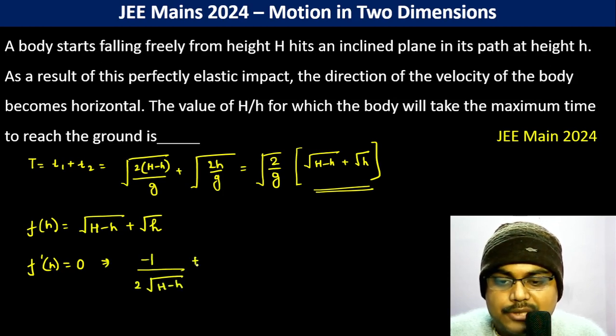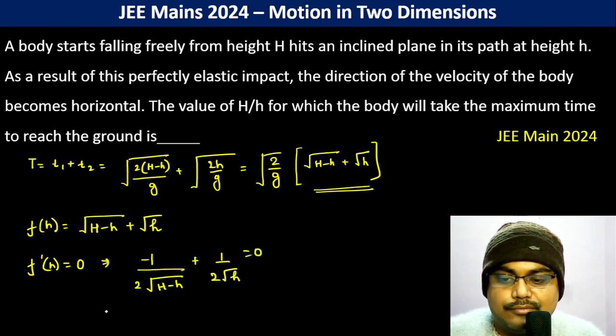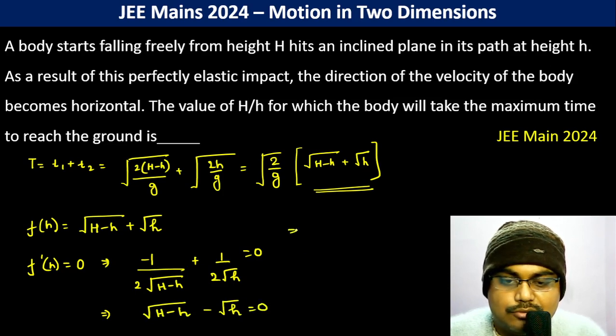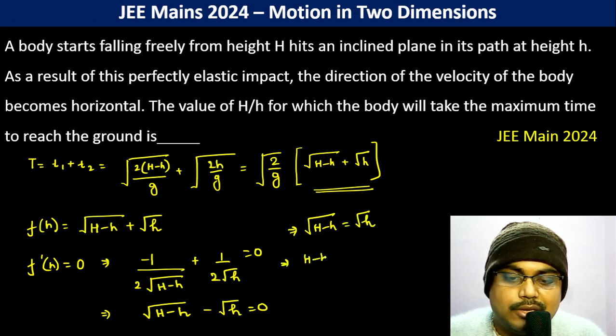This makes it 1 by 2 root h minus h times minus 1 plus 1 by 2 root h should be 0. This makes root h minus h minus root h should be equal to 0.